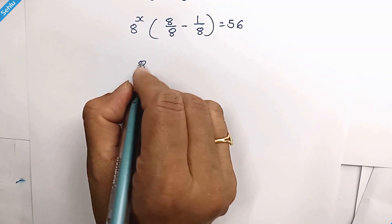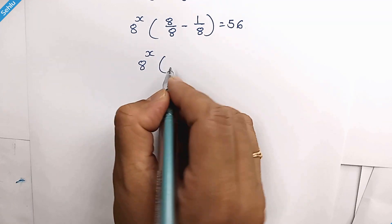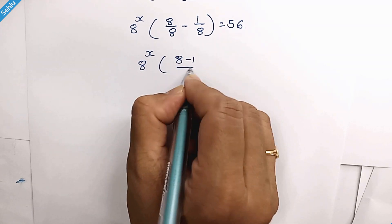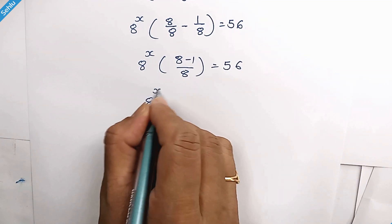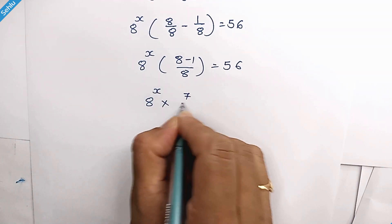So it will be 8 to the power x times 8 minus 1 over 8. So we have 8 to the power x times 7 over 8.